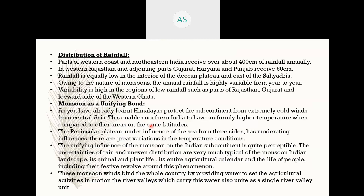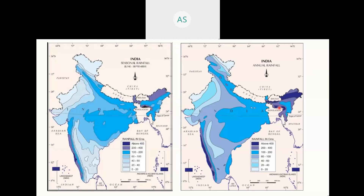Now, what is the distribution of rainfall? In which areas do we see more rainfall and in which states very less rainfall? The distribution of rainfall is not equal across our country — there is a lot of variation. With the help of a map, showing seasonal and annual rainfall, we will discuss annual rainfall. The northeastern part of our country receives very heavy rainfall — nearly 400 centimeters. This is where Mawsynram is located, which receives the highest rainfall in the world.